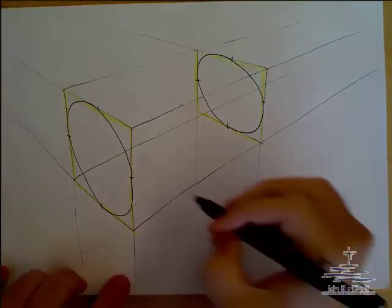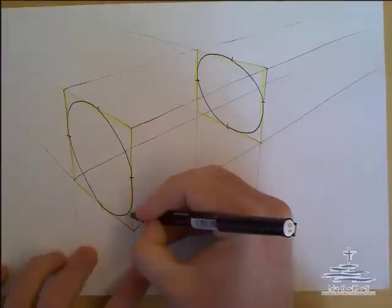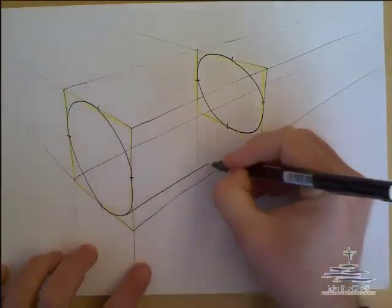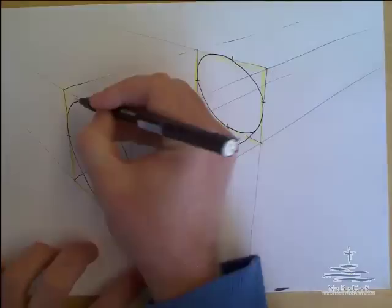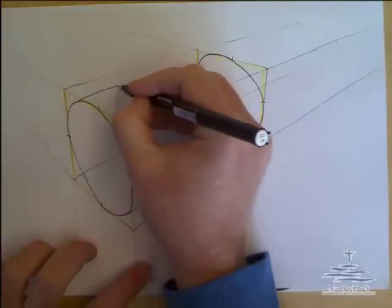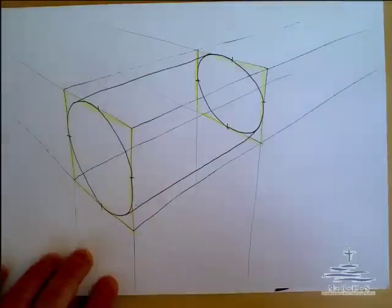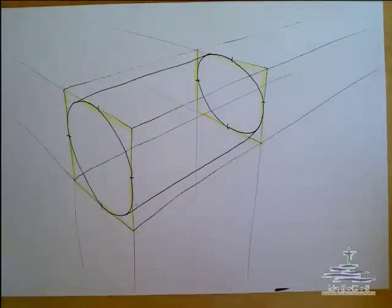Now we've got our two circles. The next step that we need to do is join from the bottom across to this side and join from the top across to this side. Now you can see we've actually made a cylinder there.